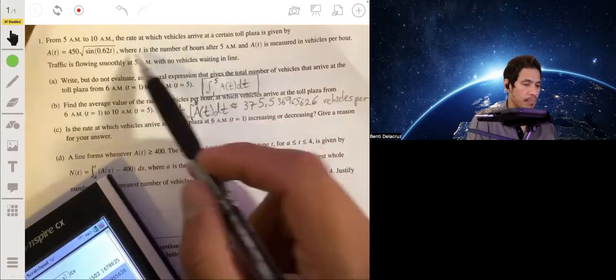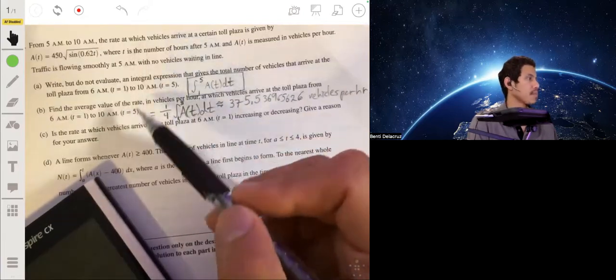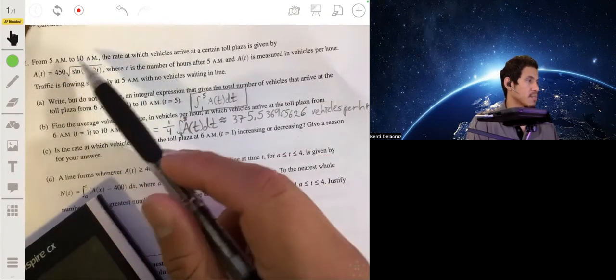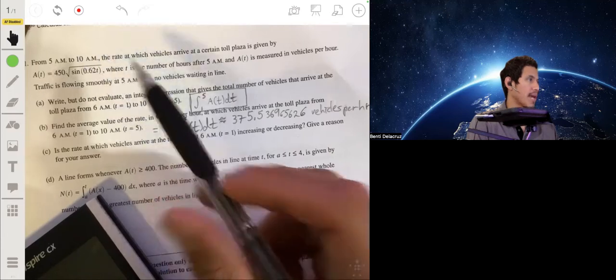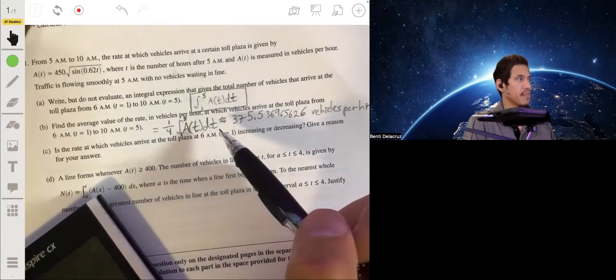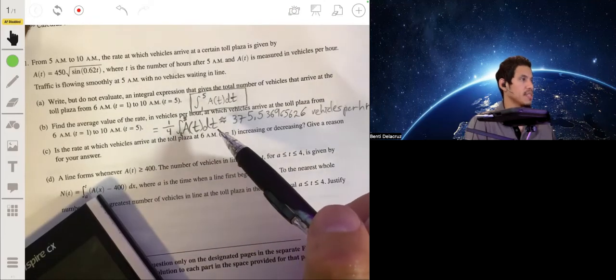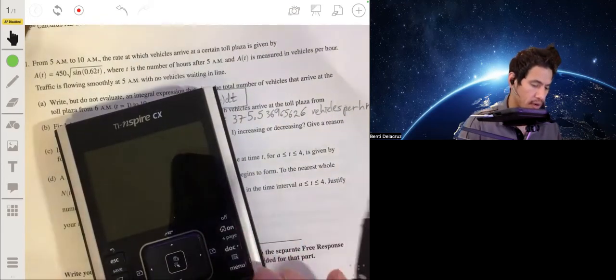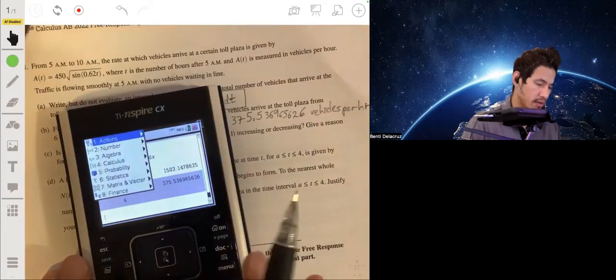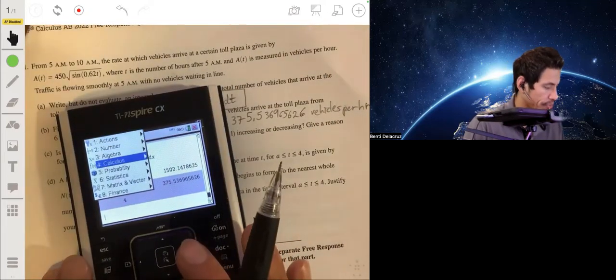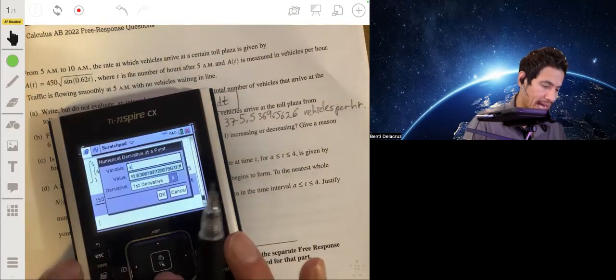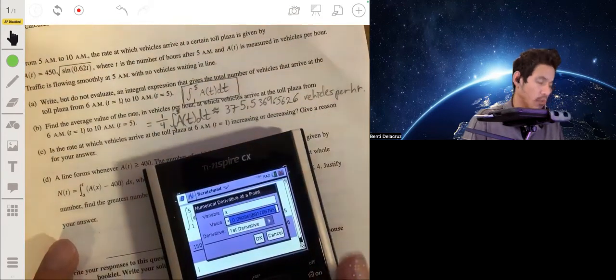Remember, this is the rate at which cars are entering the toll plaza. So to figure this out, you're just going to take the derivative of this expression at t equals 1. And if the derivative is positive, then that's saying that the rate is increasing. If the derivative is negative, then that's letting you know that the rate is decreasing. So again, we can use our calculator since this is a calculator problem.